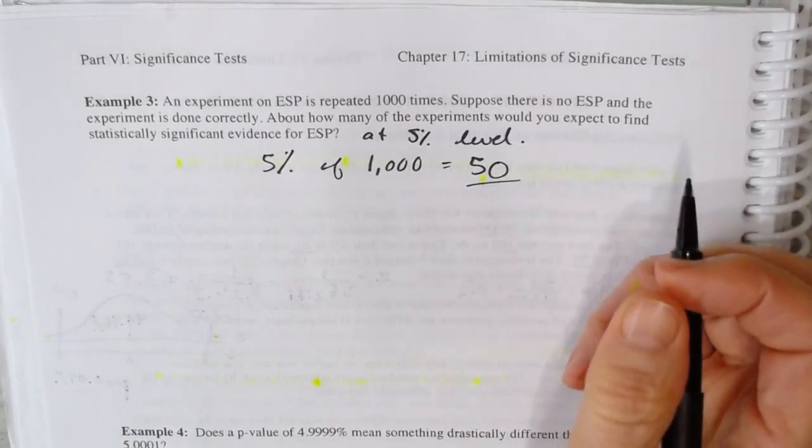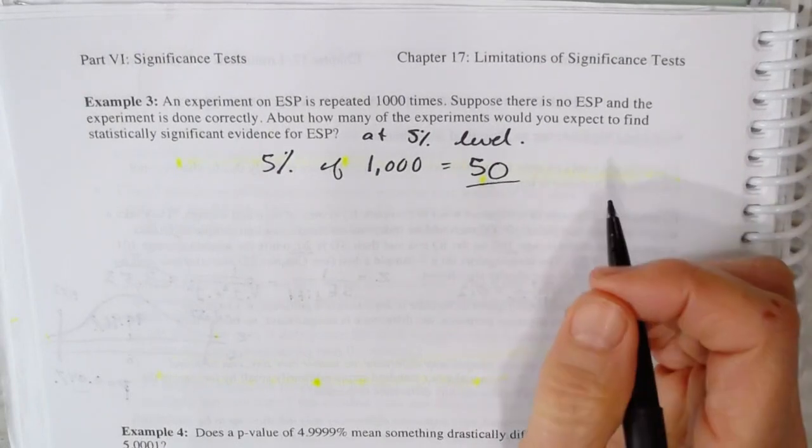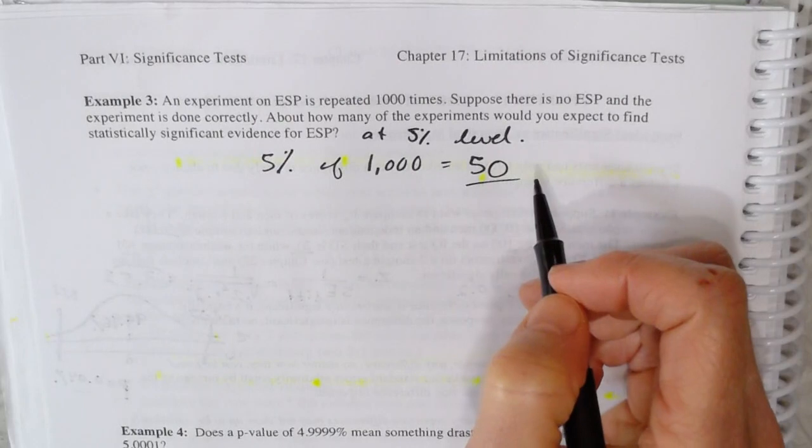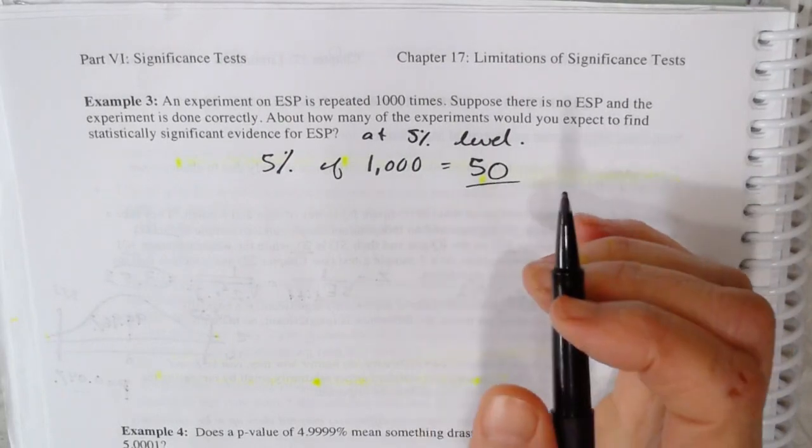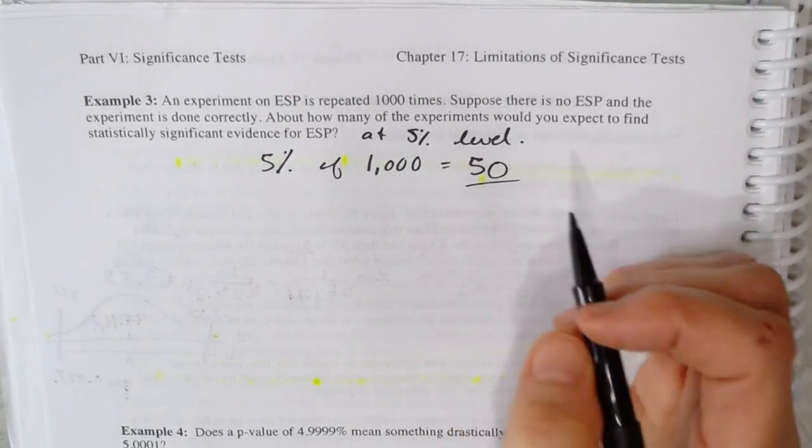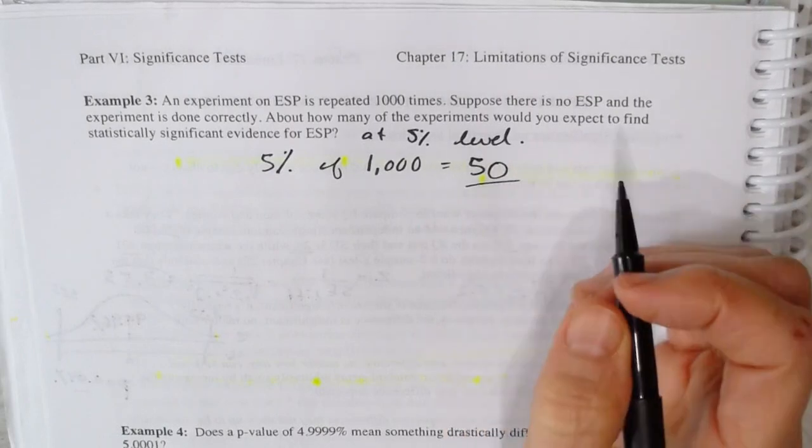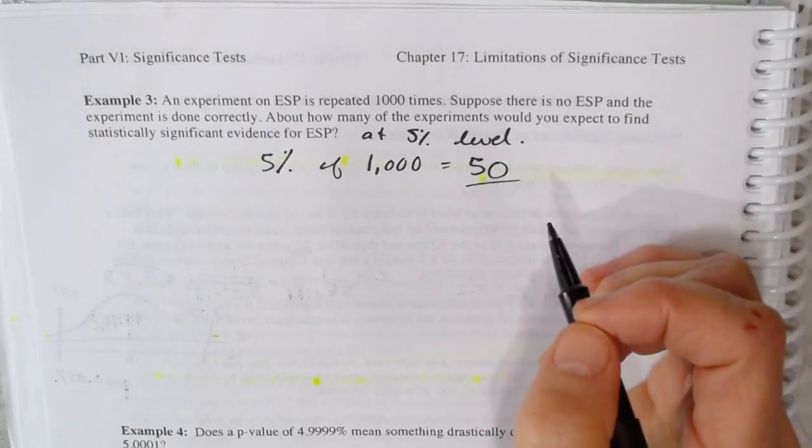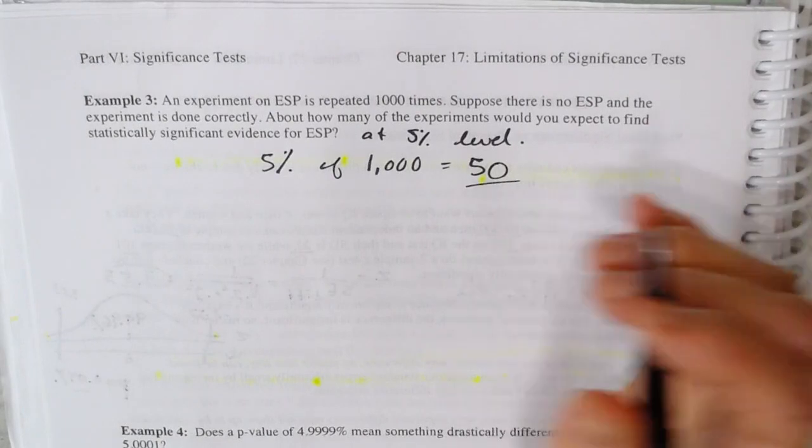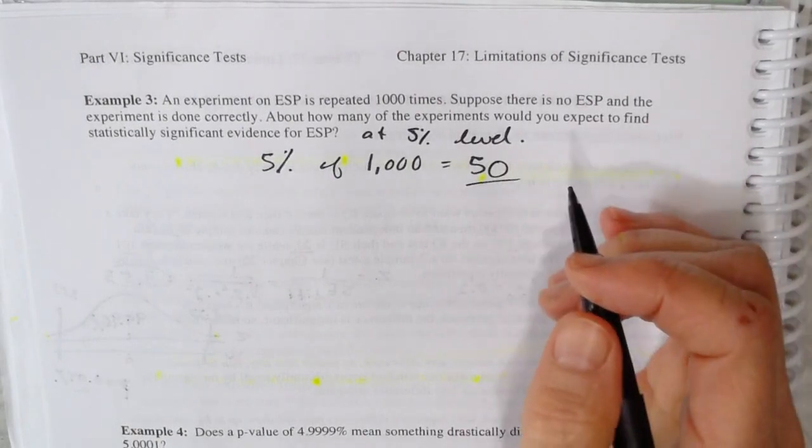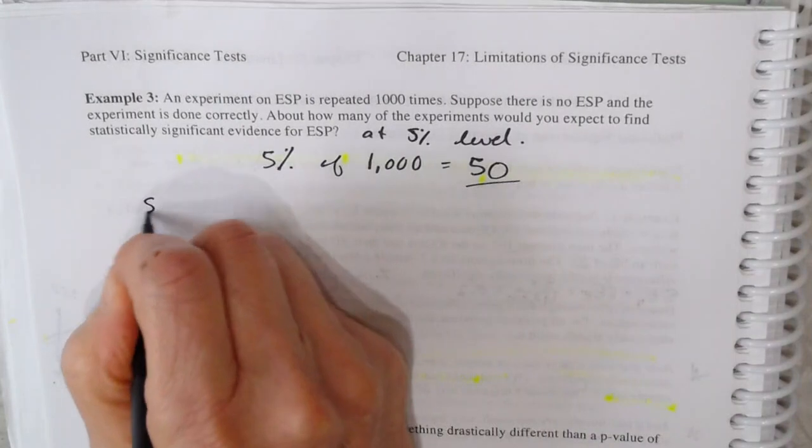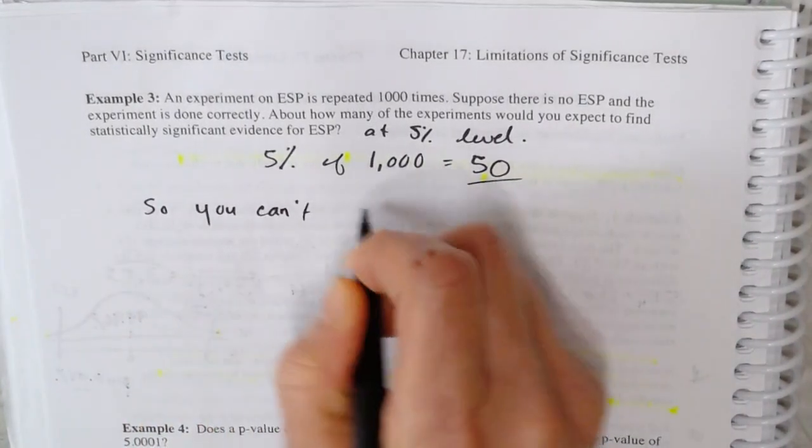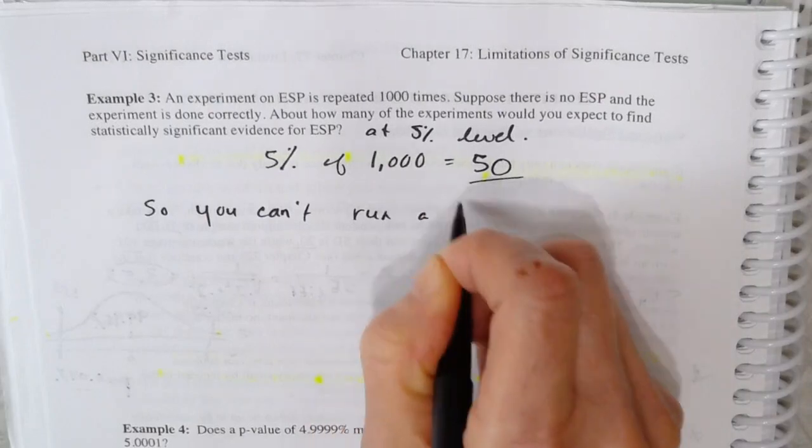So 50 would show evidence even when there's no ESP. So this happens a lot where people run many experiments and just cherry pick the ones that show significant results. And that's cheating. So you can't look over many results and then just pick out the ones that are significant.